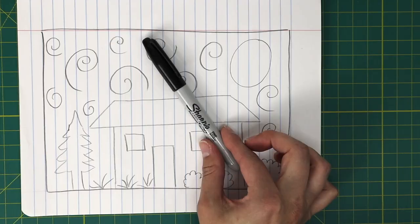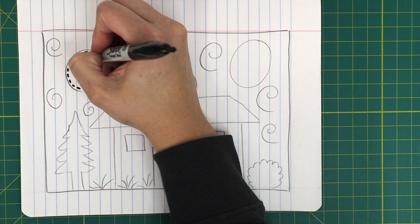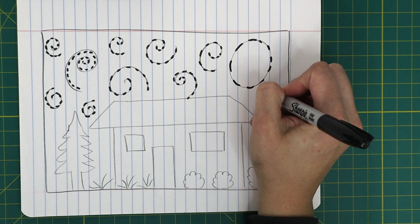With a black marker, add implied texture by using small dashes on your spirals. Fill up the entire sky with dashes moving in the same direction as your spirals.